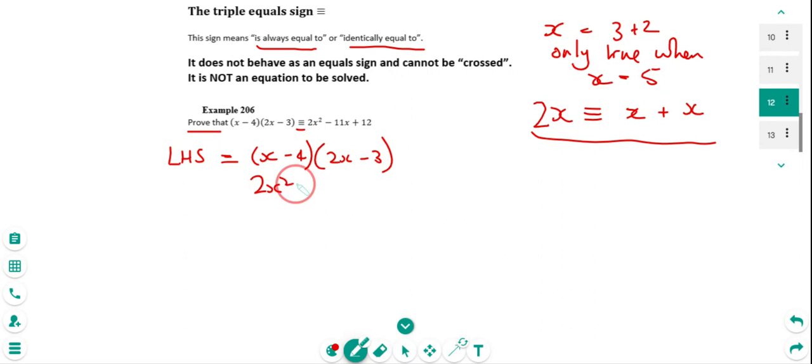So if I do that, I get 2X squared, I get minus 3X, I get minus 8X, and then we get plus 12. And just tidying that up, 2X squared minus 11X plus 12.